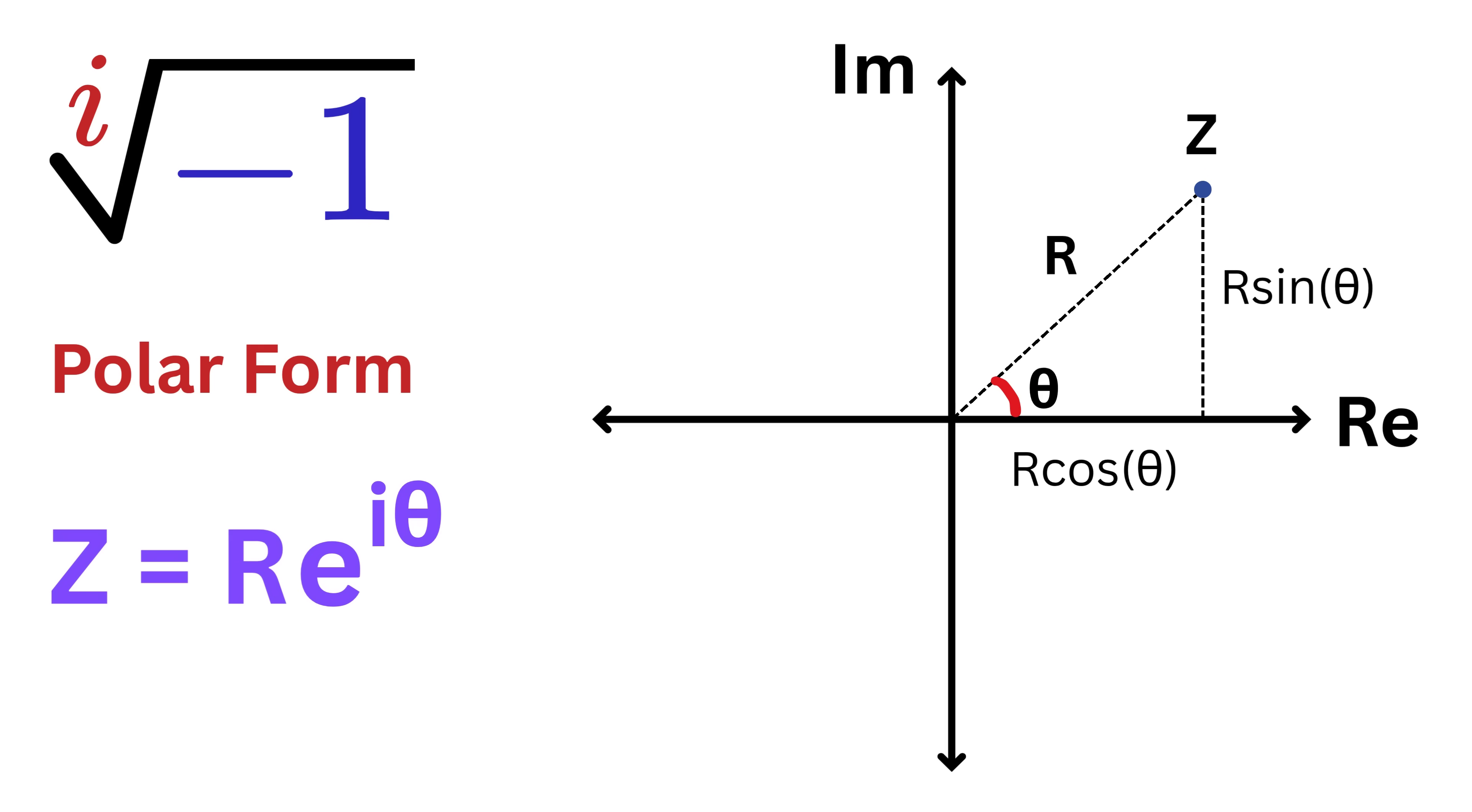Now, here comes the magic. Let's locate negative one on this plane. Negative one lies on the left side of the origin, exactly one unit away from it. So, its radius or modulus is one. Next, what's the angle it makes with the positive real axis? Since it's directly on the left, that's half the circle, meaning the angle is pi.